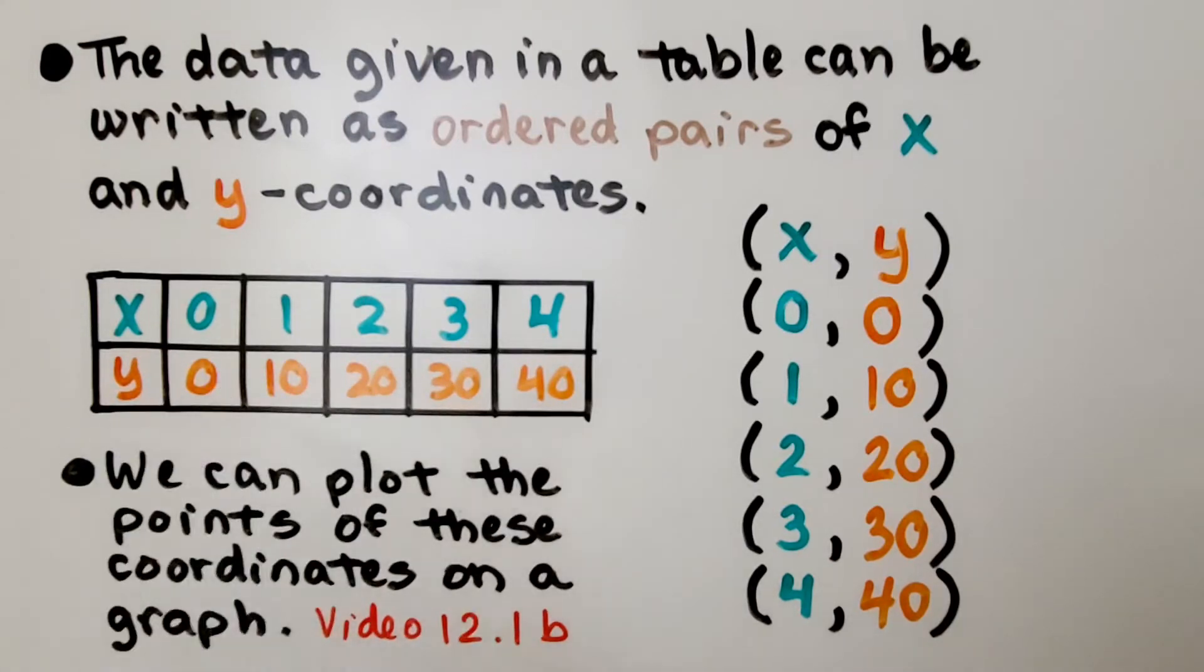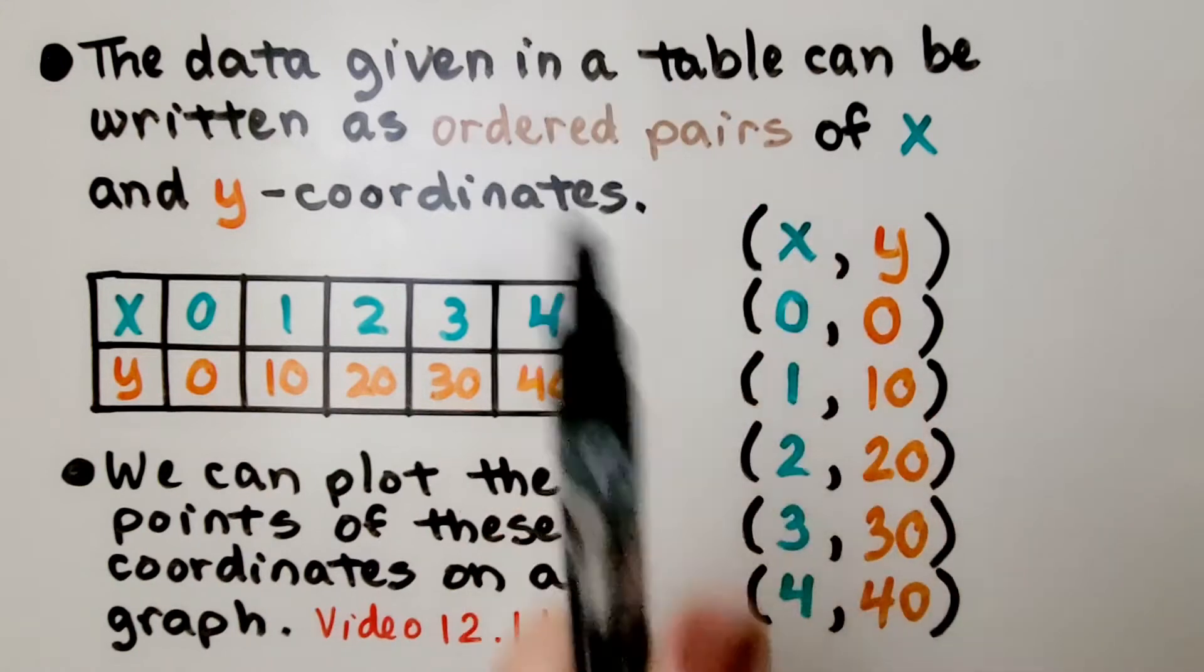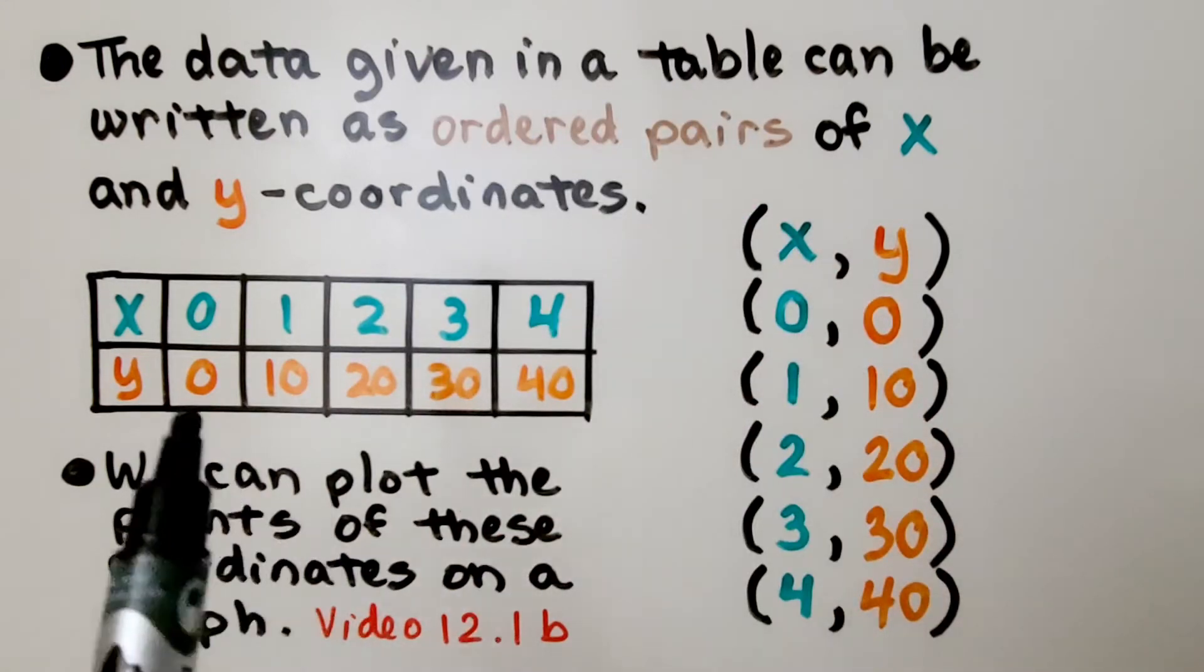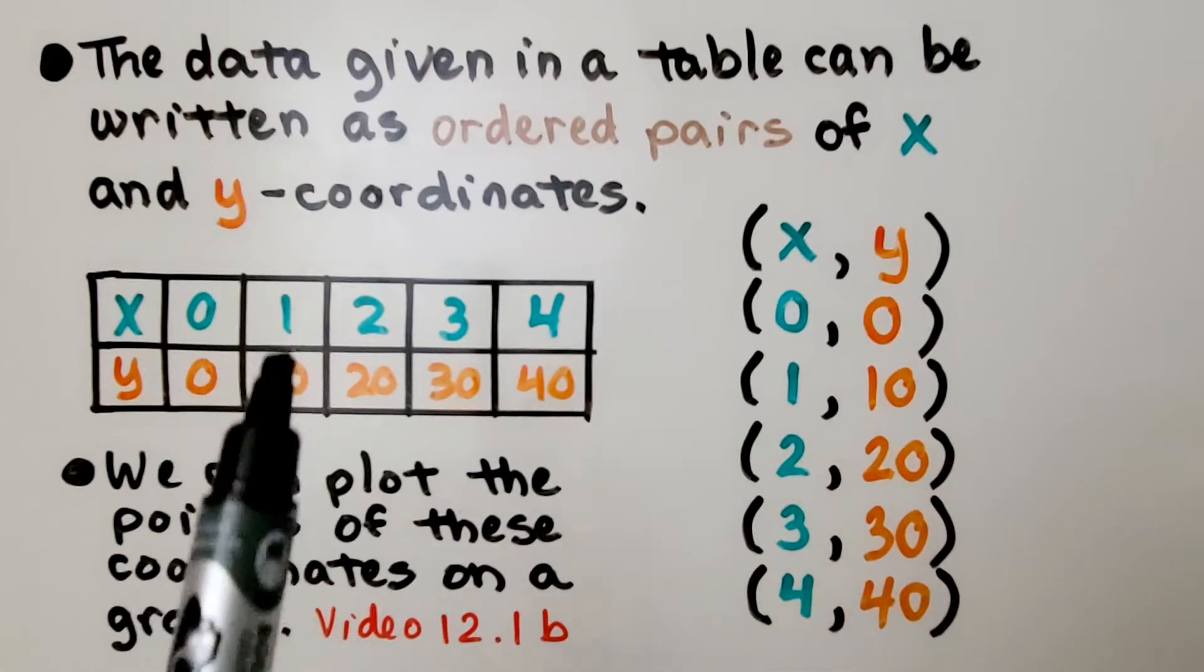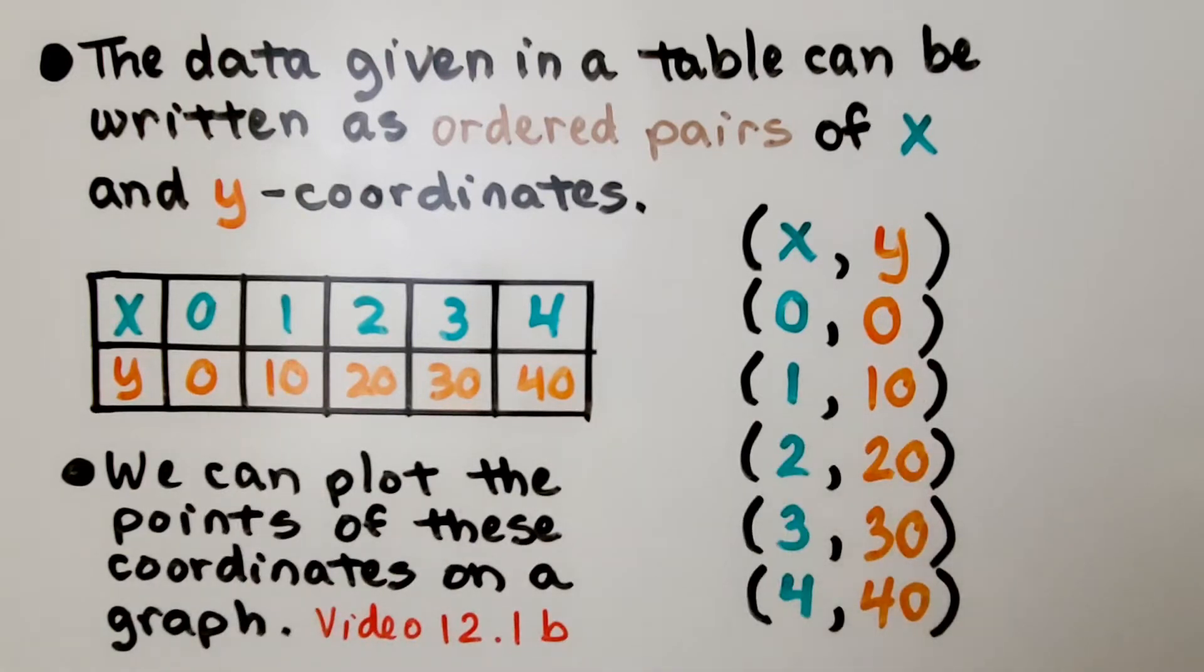Imagine taking this table and then just flipping it so it's vertical. We have 0, 0, we have a 1 for x and a 10 for y, and so on. And we can plot these points of these coordinates on a graph. And if that's confusing, that video is linked in the description.